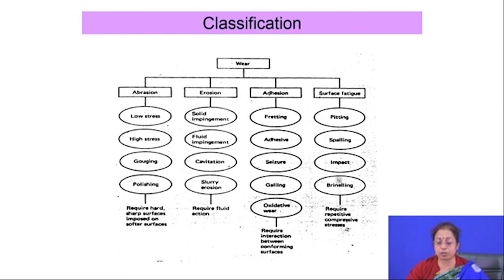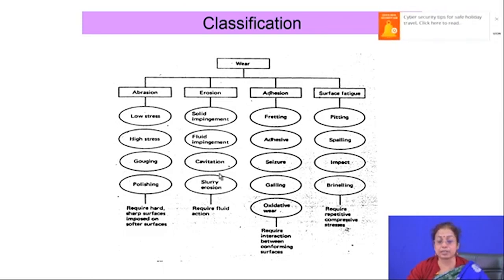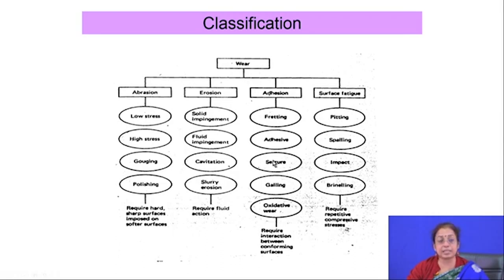In 75 percent of cases, wear proceeds by the loss of material — it is progressive in nature, not very fast like fatigue or compressive failure. However, in a few types of wear — such as brinelling, galling, and sizing — there is minimum loss of material but there is de-shaping of the component.